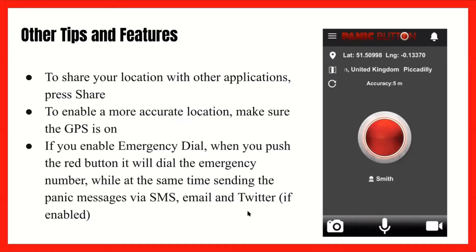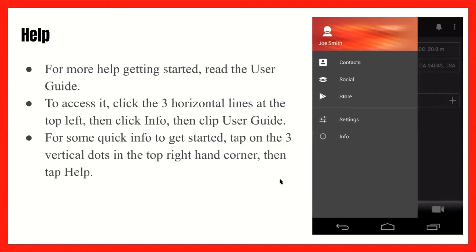Other tips and features of the Red Panic Button app: to share your location with other applications, press Share, which you can navigate to through the three horizontal lines on the top left of the app. To enable a more accurate location, make sure the GPS is on. If you enable emergency dial, when you push the red button it will dial the emergency number while at the same time sending panic messages via SMS, email, and Twitter if enabled — it sends out a lot of different messages for redundancy so people really get the message that you're in trouble. For more help getting started, read the user guide on the app: click the three horizontal lines at the top left, then click Info, then click User Guide. For quick info, tap the three vertical dots in the top right corner, then tap Help.